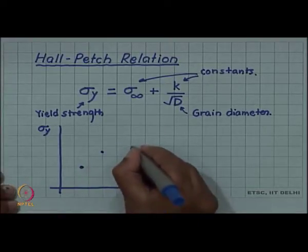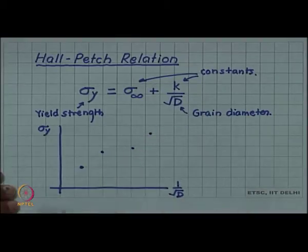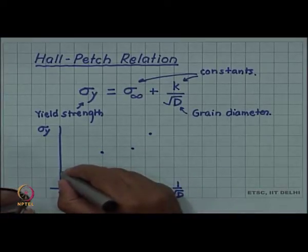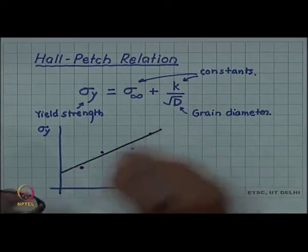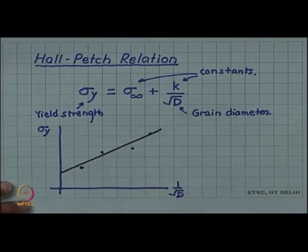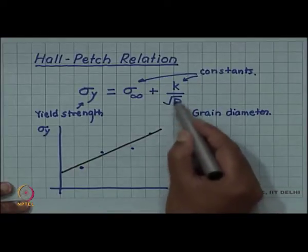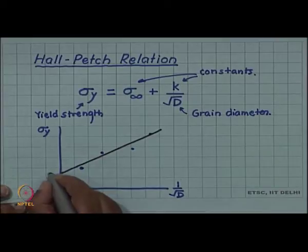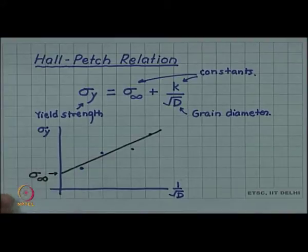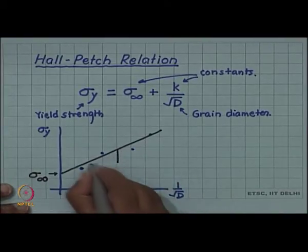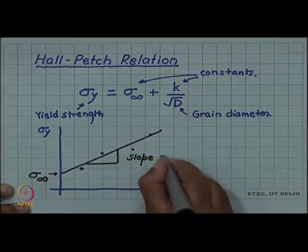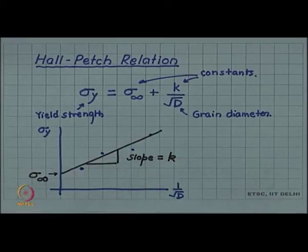So if this relationship is true, you should expect a straight line. So to the experimental data, if you fit the best fit straight line, then the intercept you can see from here, if 1 by root d is 0, then this will be the intercept and that will be sigma infinity and the slope will give you the constant k.